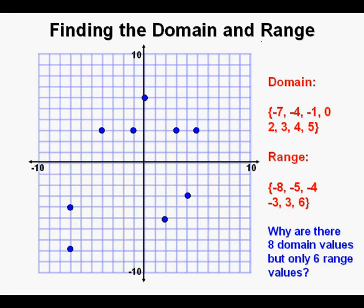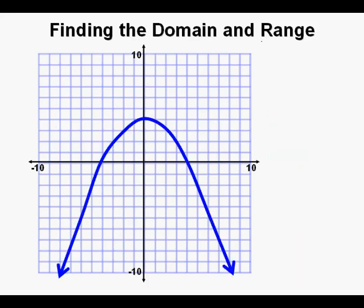Why are there eight domain values but only six range values? I won't answer the question but will let you think about it. Now let's look at this relation. Since we don't see points on the graph, this relation is not discrete but rather continuous because it continues unbroken no matter where we go on the graph from left to right.